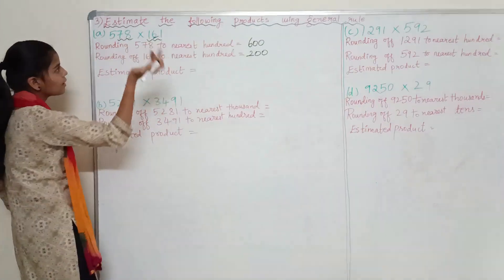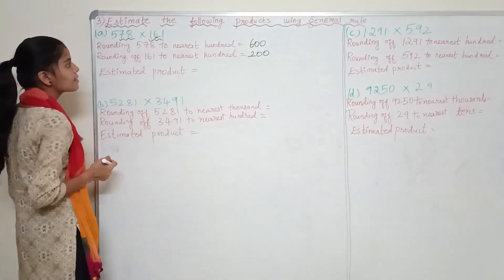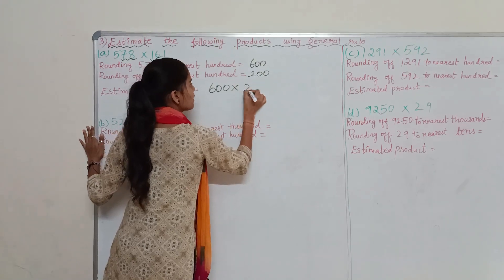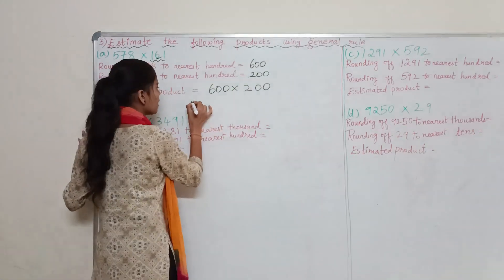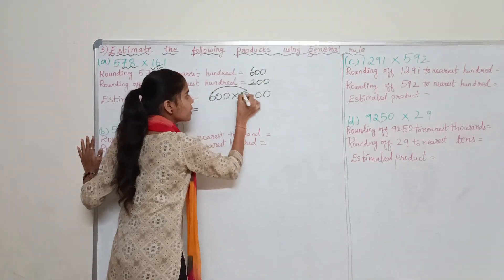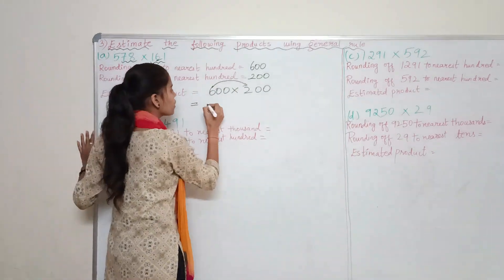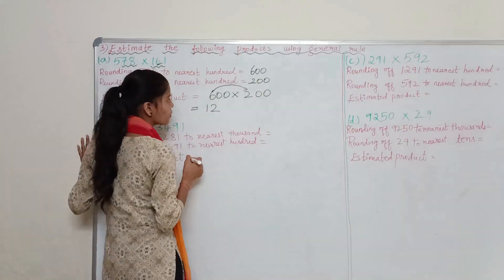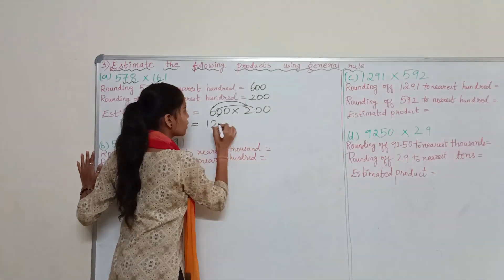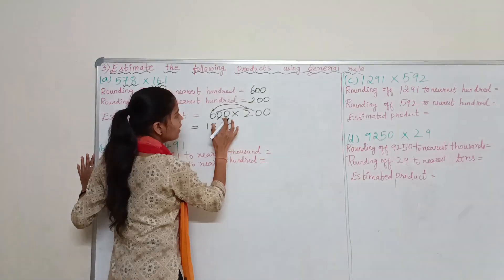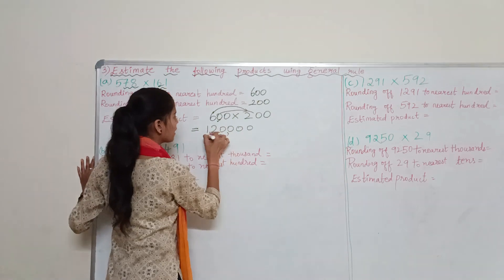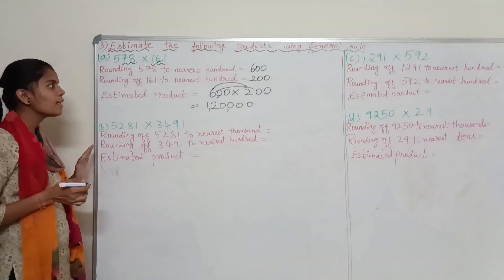Here also 7 is greater than 5, so we have written 600. Now for the estimated product — since it is multiplication, 600 × 200. We compute 6 × 2, which gives 12, and there are 2 zeros, so the estimated product is 1,20,000.